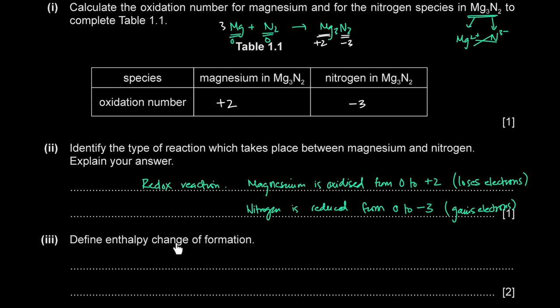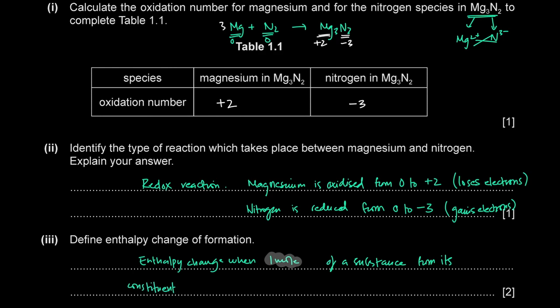Define enthalpy change of formation. The enthalpy change of formation is the enthalpy change when one mole of a substance is made from its constituent elements in their standard states.